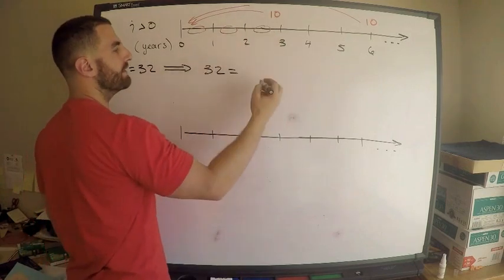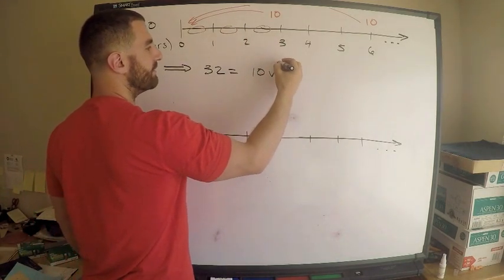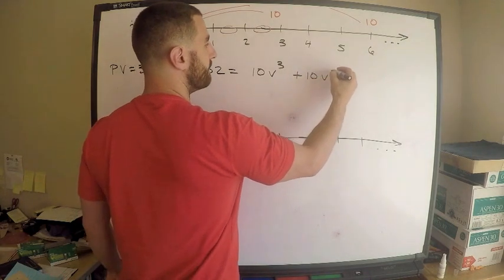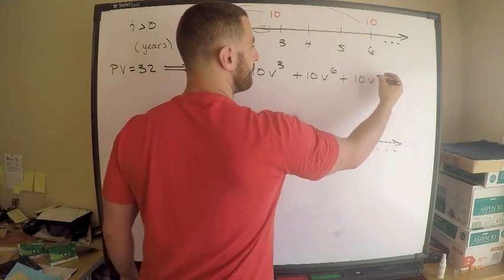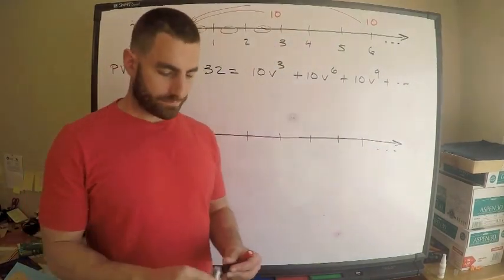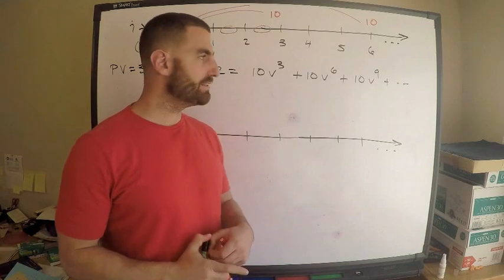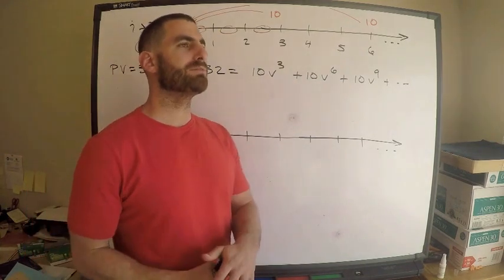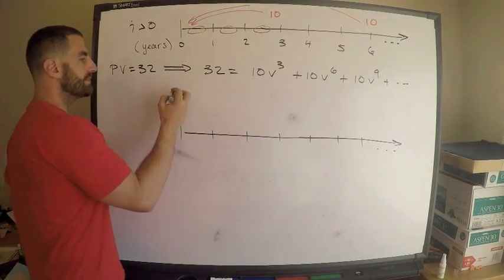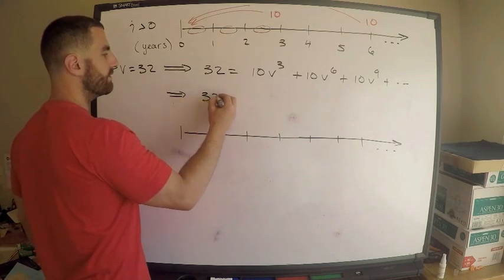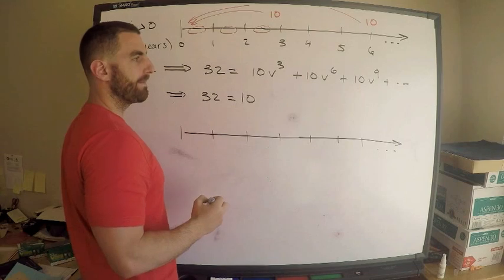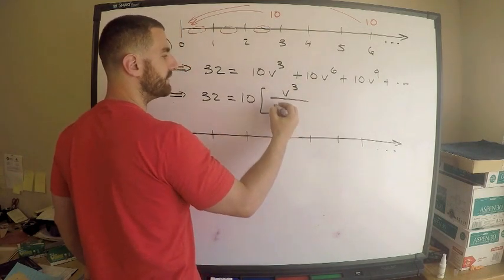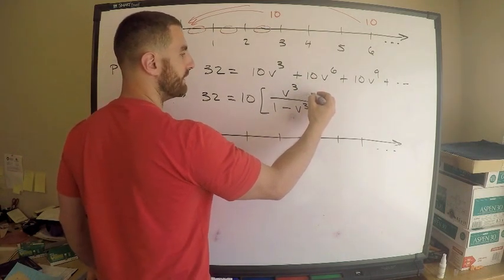Bottom line is 10 needs to be discounted three years, so 10 - the discount factor we use, convention is V. Plus 10V^6, plus 10V^9, and so on. Lo and behold, geometric series. Not hard to see this as geometric series. Some of the geometric series in exam P are much more difficult to recognize - this I think is straightforward.